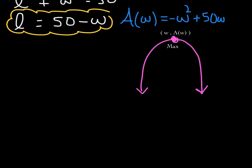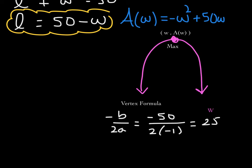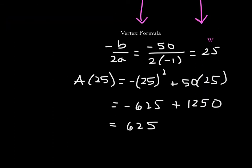Let's use the vertex formula to find the first coordinate of the vertex, then find A of w. The vertex formula is negative b over 2a, which in this case is negative 50 over 2 times negative 1, the leading coefficient. This turns out to be 25. So the width of our garden is 25 feet. Plugging 25 into the area function gives us a maximum area of 625 square feet.